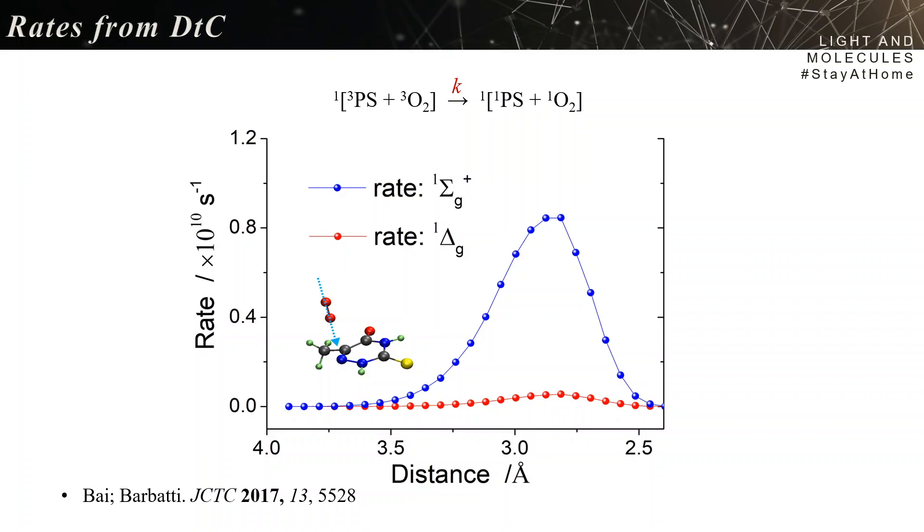Like in this case here. The blue curve gives the rate to form the singlet state in the sigma oxygen, and the red curve is the rate to form the singlet state in the delta oxygen. And this is calculated for the direction indicated in the figure, where the O2 is coming perpendicular to the plane of thiotiamine.